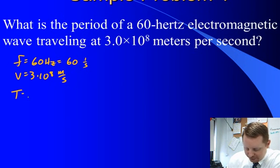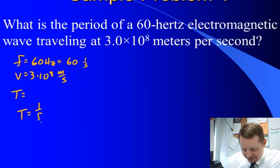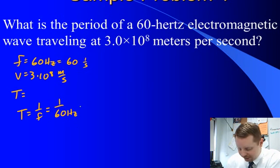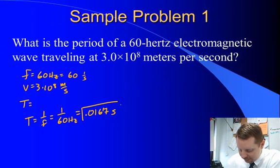We want to know what its period is. Well, to get period, if we have frequency, that's just 1 over the frequency or 1 over 60 hertz or 1 over 60 1 over seconds, which is equal to 0.0167. If you have 1 over 1 over seconds, that's 0.0167 seconds.